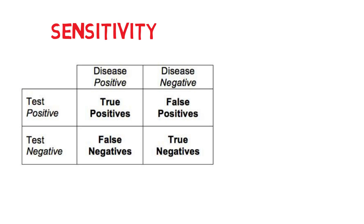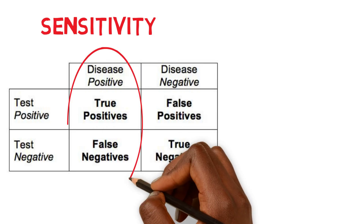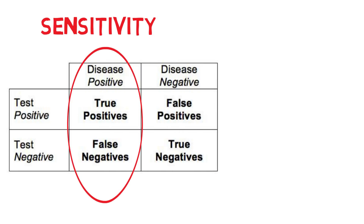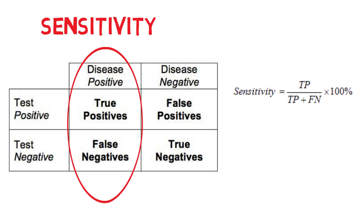For sensitivity, all you have to do is circle the first column — the true positive and the false negative — and just like rule number one, true is always on top. So the sensitivity equation is true positive divided by true positive plus false negative.